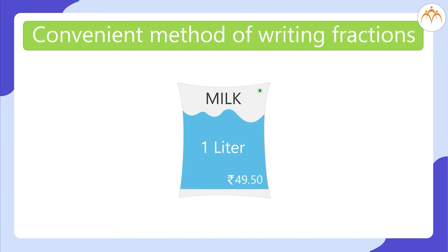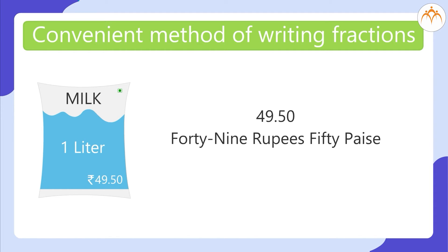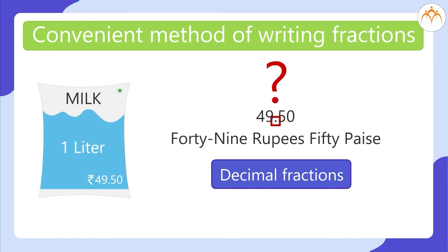The price of one liter of milk is rupees 49.50. It is written on the packet. Rupees 49.50 means 49 rupees 50 paise. Why is a point written in between? To understand this, we need to learn decimal fractions.